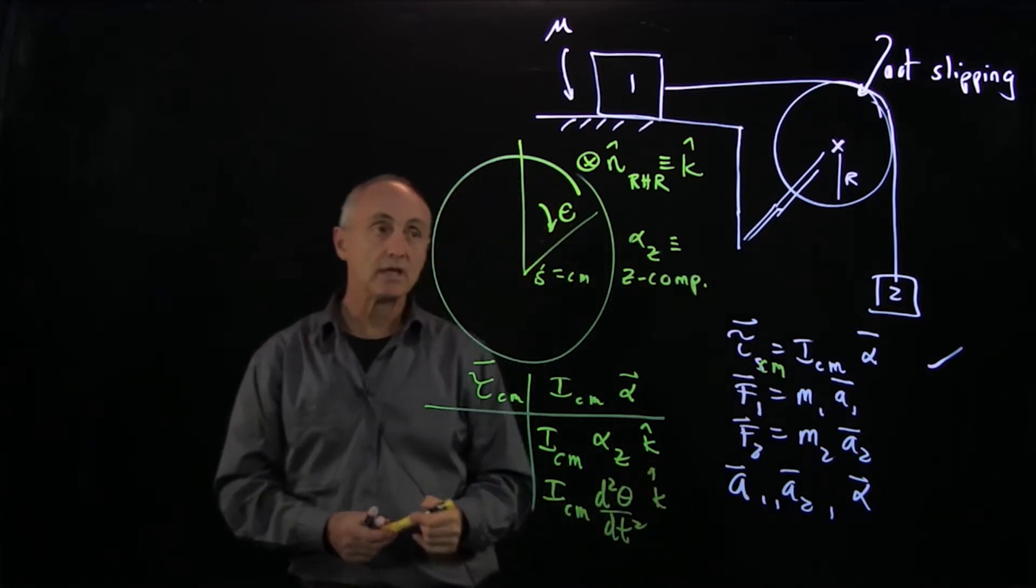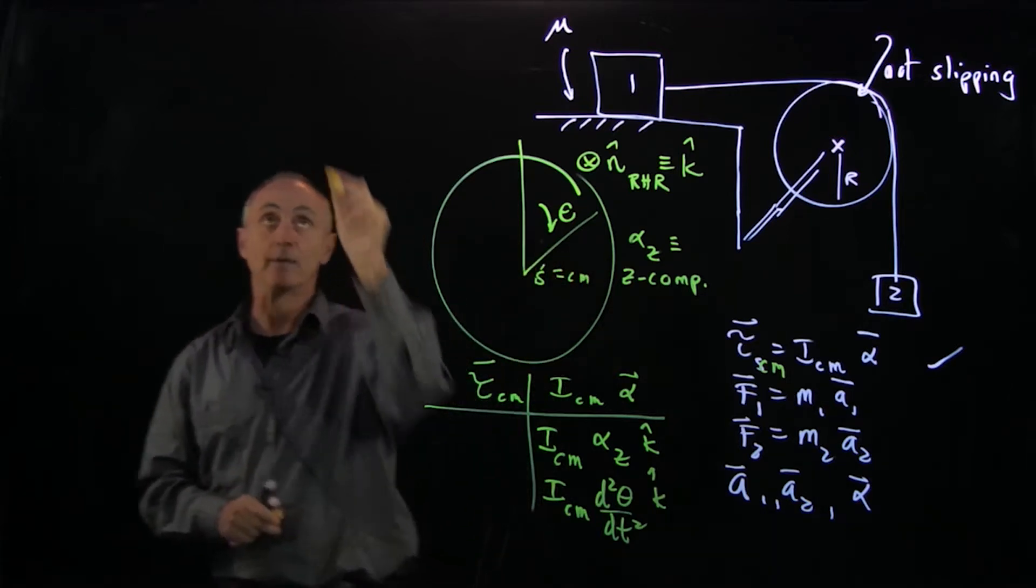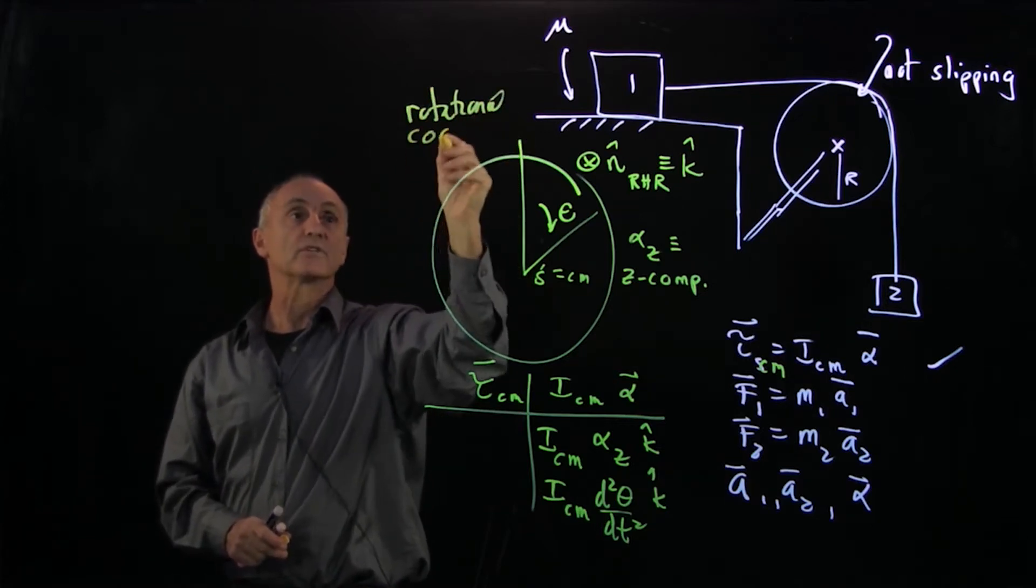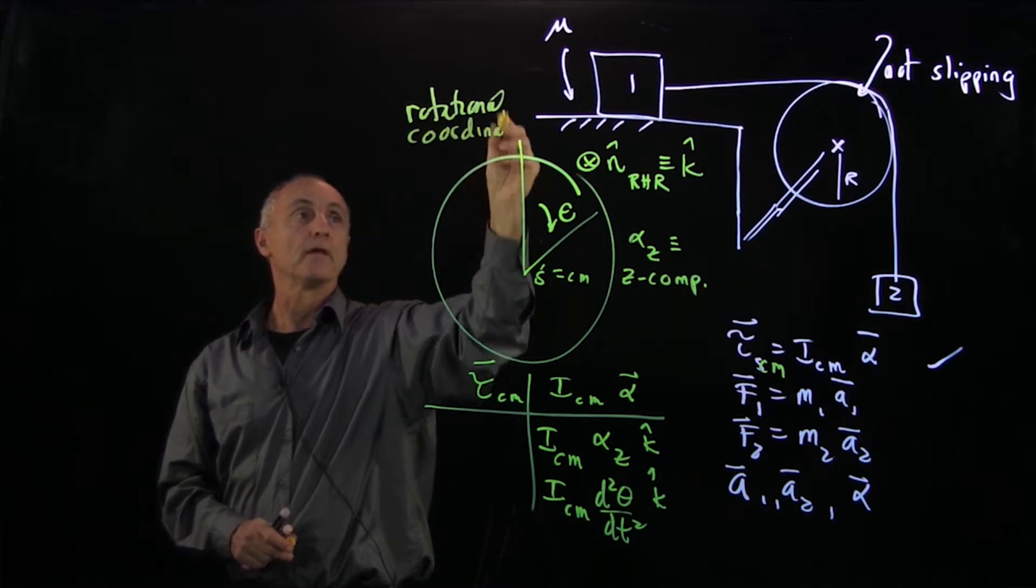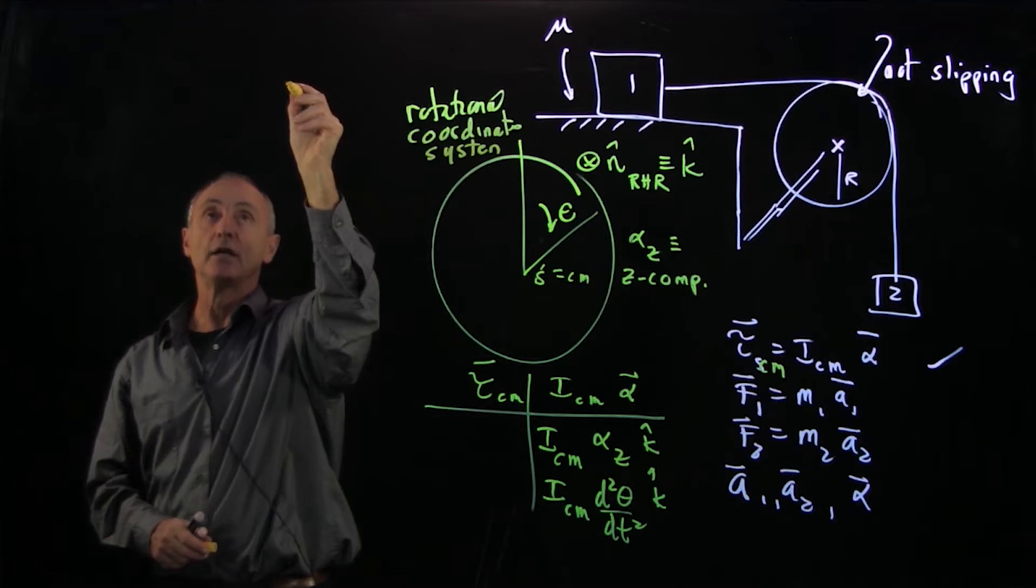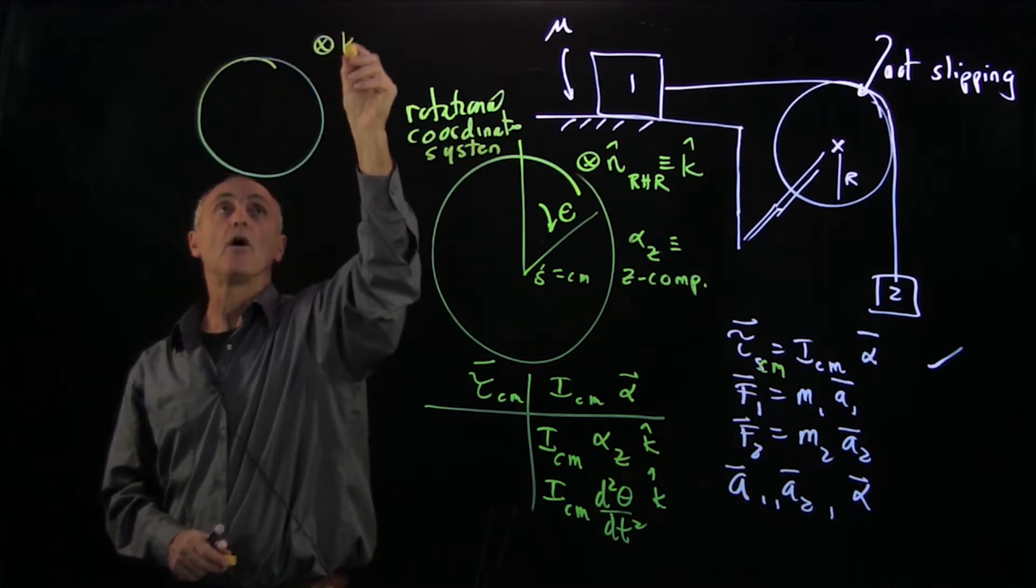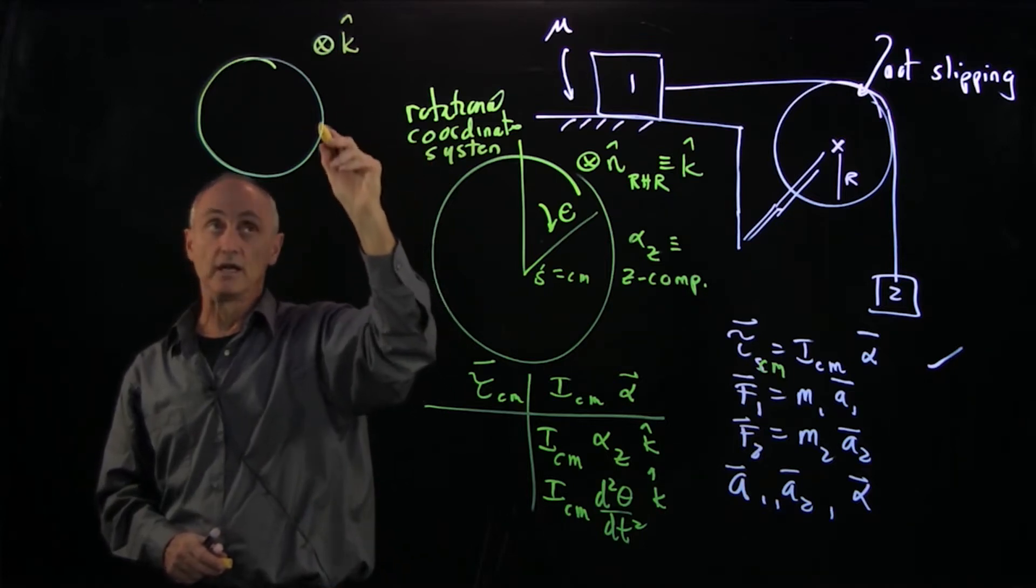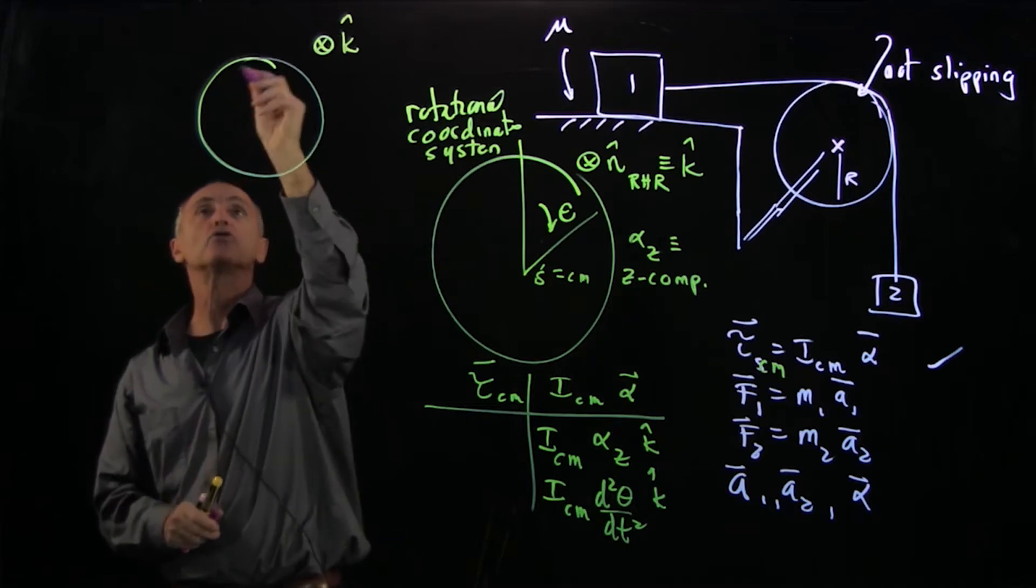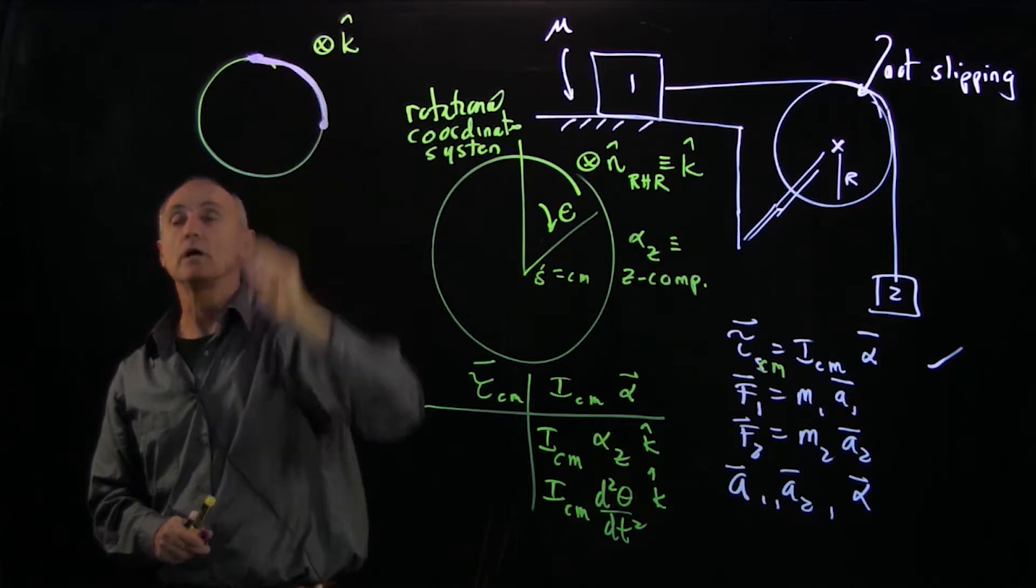The next step is to define the forces that do what we call a torque diagram. So this is my rotational coordinate system. The next step is to construct a torque diagram, and the way we do that is we draw the object and indicate our rotational coordinate system.